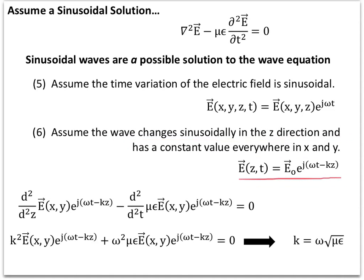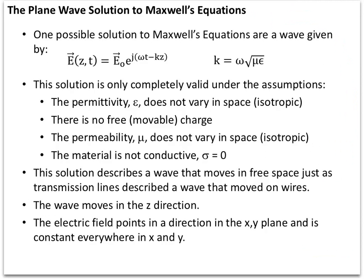Taking this form of the solution and plugging it into the wave equation, you get a k squared for the Z term and an omega squared for the time term. When you cancel the exponentials and the fields on both sides, you find a relationship between k — the phase change of the wave along Z — and omega — the time change of the wave — and that k and omega are related to the propagation constants. We'll cover this in detail in the next lecture.